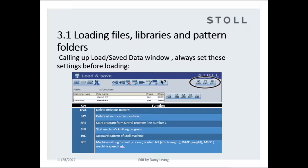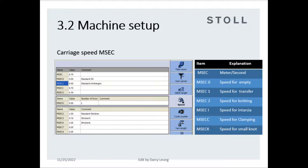SIN: stole machine's knitting program. JAC: jacquard pattern of stole machine. Machine setup — carriage speed MSEC. MSEC means meters per second. MSEC 0 is speed for empty row without any needle action.